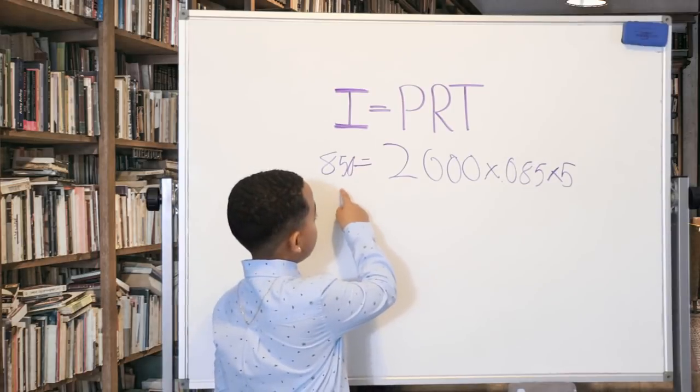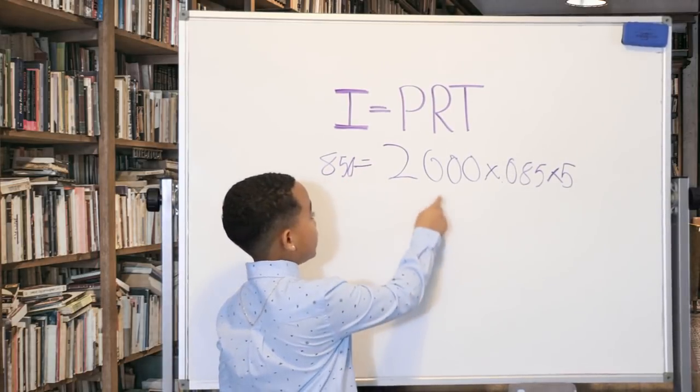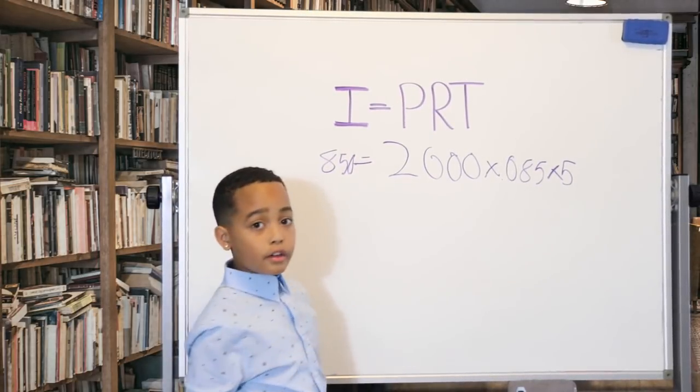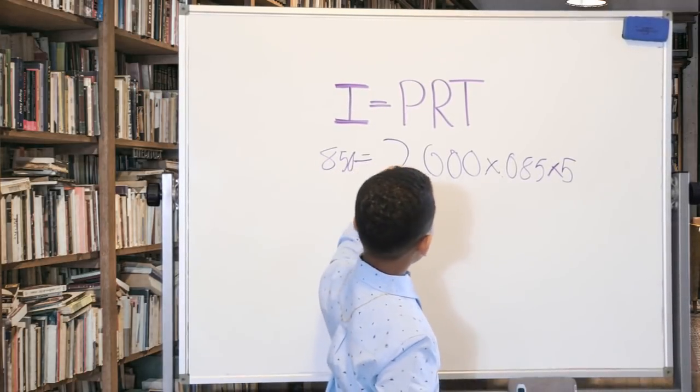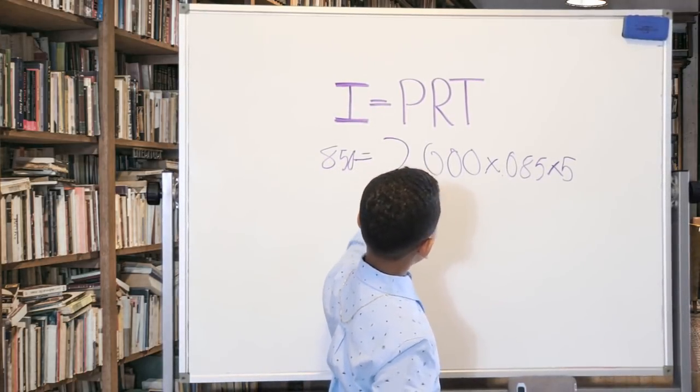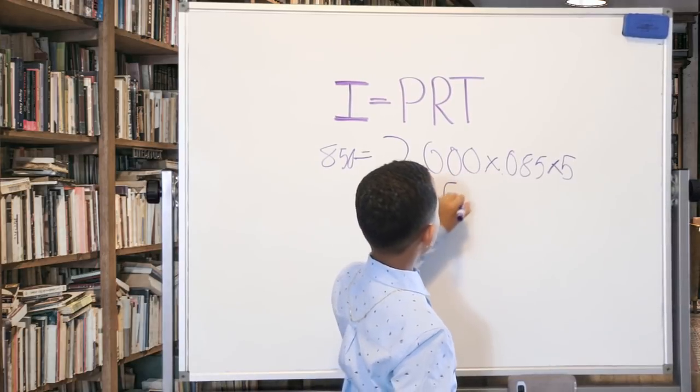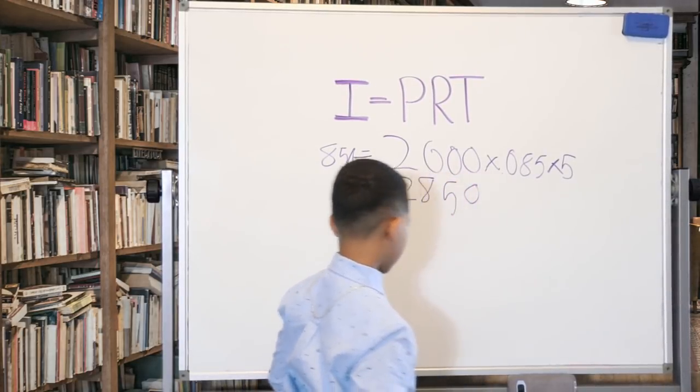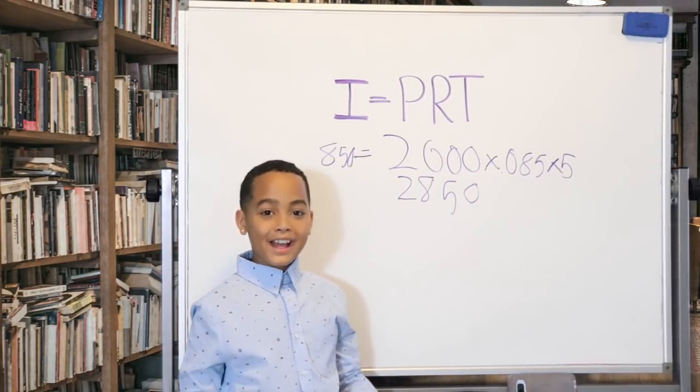Now what we're going to do is add $850 and $2,000 together to see what your total is in your account. So that would be $2,850. And that's simple interest.